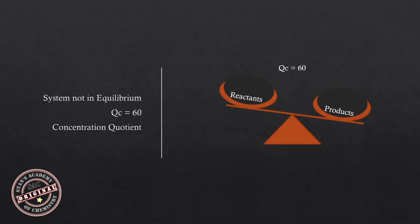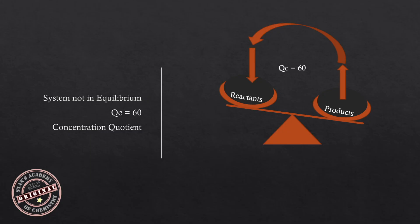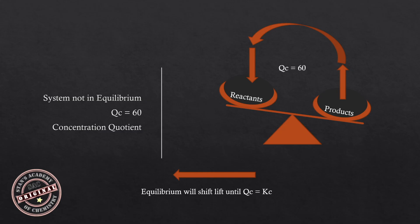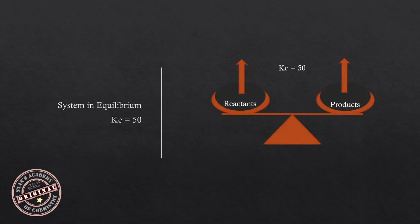Looking at the graphical representation when Qc is greater than Kc: we have more products than reactants, so more products start changing back into reactants. The rate of the backward reaction increases and equilibrium shifts left until Qc equals Kc. More reactants are formed as products decompose, and the rate of the backward reaction is greater than the rate of the forward reaction until equilibrium is achieved. At equilibrium, the rates of the forward and backward reactions achieve constancy.